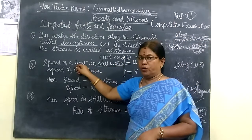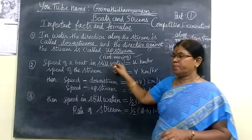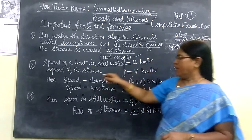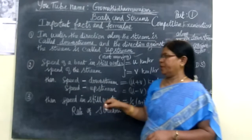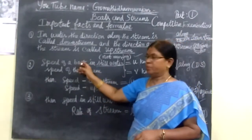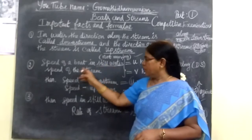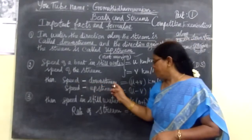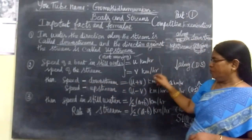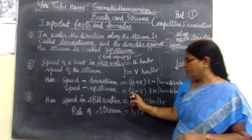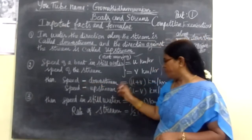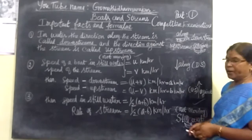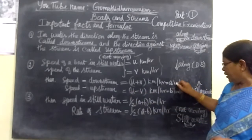Speed of your boat in still water — suppose we take it as u kilometers per hour. Then speed of the stream is equal to v kilometers per hour. Then downstream speed equals u plus v. Then upstream speed means u minus v. So downstream speed is u plus v, and upstream speed is u minus v.